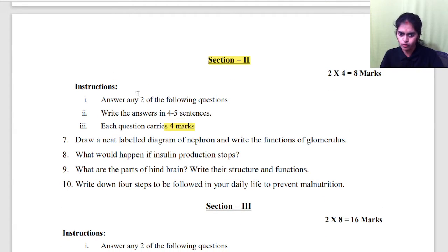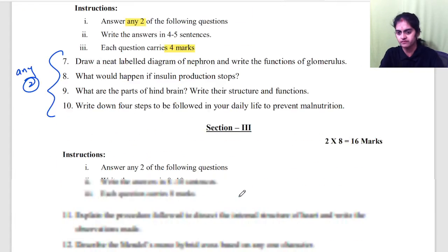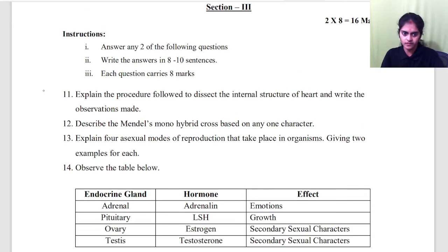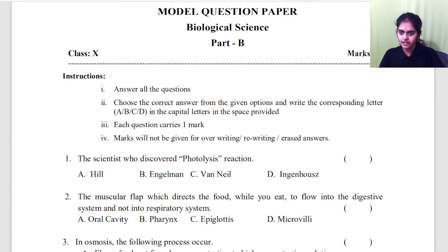Section 2, 4 mark questions, you should answer any 2. So again, here 4 questions are given, out of which any 2 you should answer. Section 3, again 4 questions are given, it is 8 marks, you should answer any 2. And then the part B, part B, you will have for 10 marks. So, 10 multiple choice questions you will have.